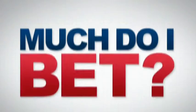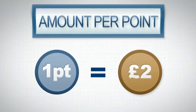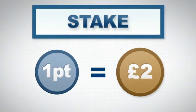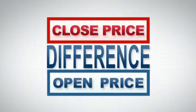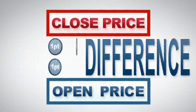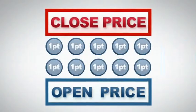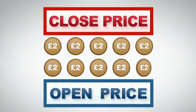How much do I bet? Financial markets are measured in points. You bet a certain amount per point — your stake. For example, £2. The amount you win or lose is the difference between the price you open at and the price you close at, multiplied by the amount per point that you bet.